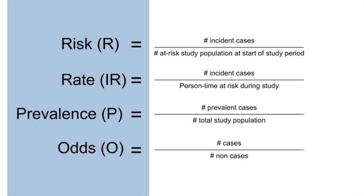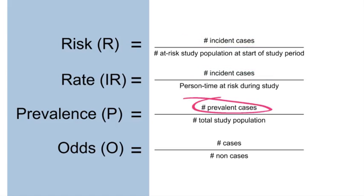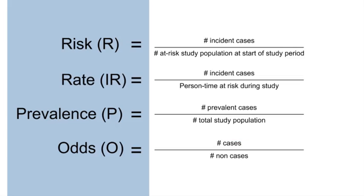Before we go any further, I'd like to highlight the differences and similarities among these various measures. Most importantly, risks and rates both use incident or new cases, whereas prevalence uses prevalent — i.e., existing — cases, and odds can use either incident or prevalent cases. Note the denominators: risk has the at-risk study population at the start of the study period, rate uses person time at risk during the study period, prevalence uses the total study population, and for odds, the non-cases form the denominator.